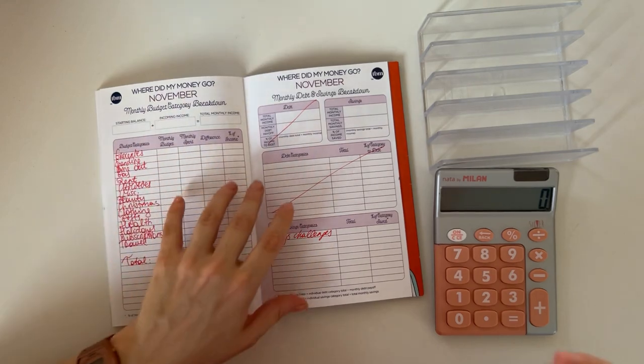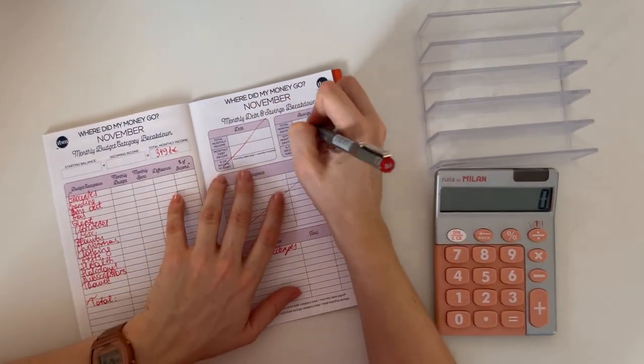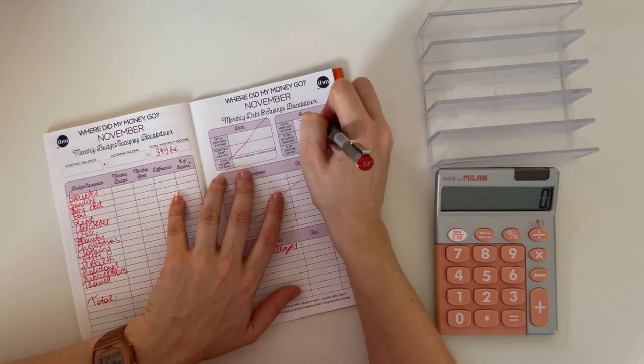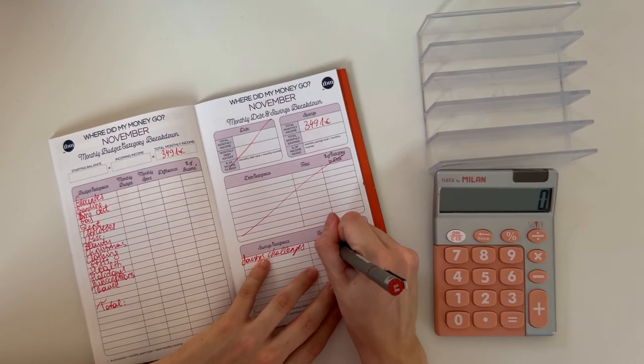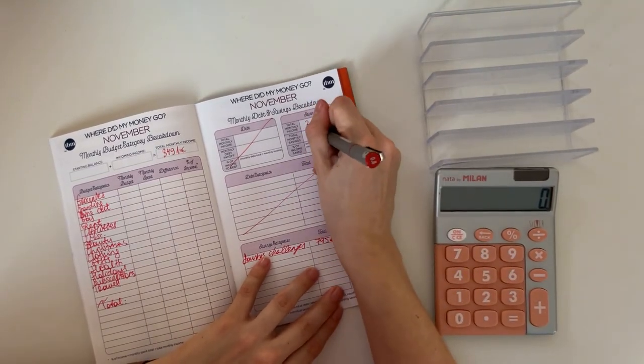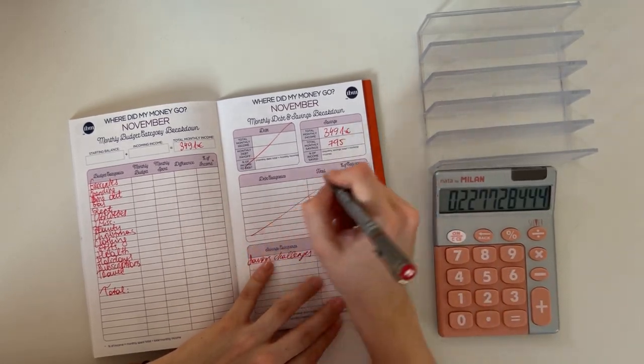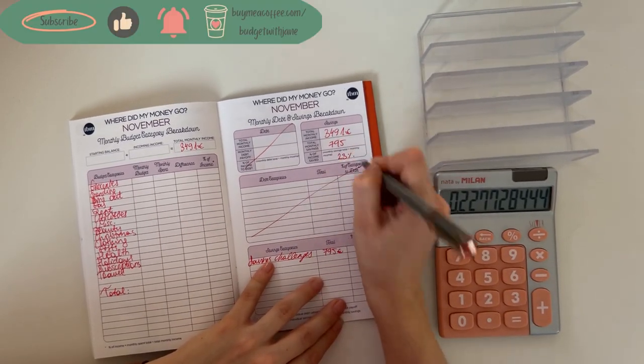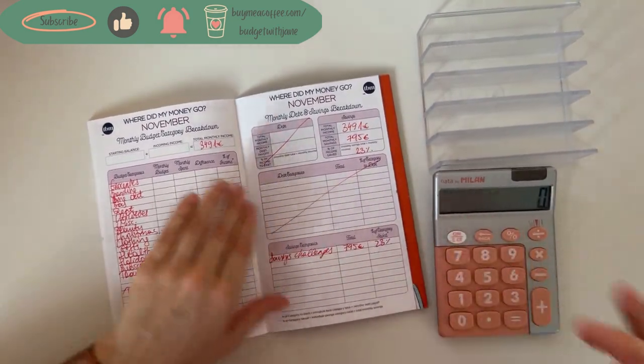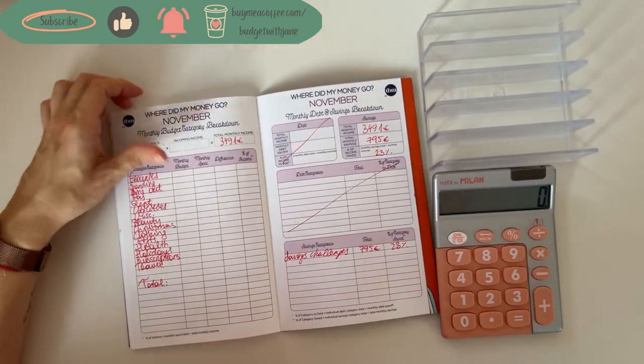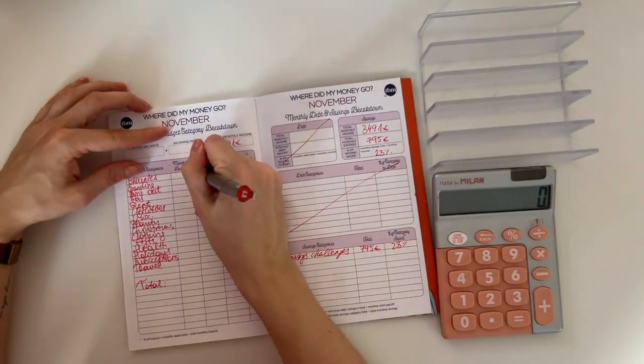Now let me quickly go through the amounts for the month. Our total monthly income was 3,491 euros, and I'm going to put that down. What we put in savings was 795. So if we count 795 divided by 3,491, we put 23% of our income into savings. That is very nice.